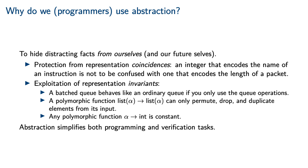This provides protection from representation coincidences. For instance, an integer that encodes the name of an instruction is not to be confused with one that encodes the length of a packet. A more advanced use of abstraction is to exploit representation invariants. For instance, a batched queue has better amortized complexity than an ordinary queue, and if your code only uses the queue operations, you can be sure that it will not depend observably on the difference between a batched queue and an ordinary queue. Likewise, polymorphic functions between lists can only permute, drop, and duplicate elements, so there are only so many things that can be incorrect about such a function. For a more extreme example, any polymorphic function into a constant type is itself a constant function. Therefore, abstraction simplifies both programming and verification tasks.